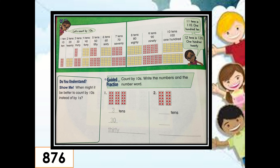Let's continue doing your classwork on page 876. We will count by ten, write the number, and the number word. For example, number one — count how many tens or groups of tens there are: one, two, three. We have here three tens. Three tens is thirty. Write three and add zero, then write the number name thirty. Let's do number two — how many tens are there? One, two. We have two tens, and two tens is equal to twenty. Write two and add zero, then write the number name for twenty. Very good.